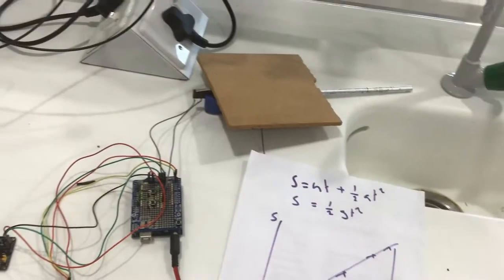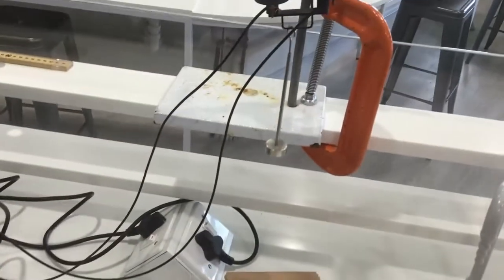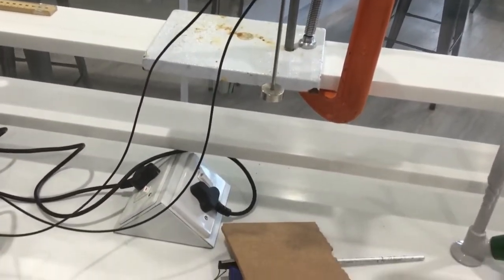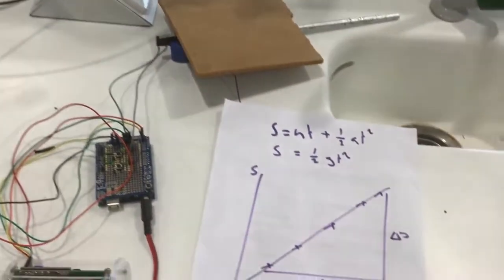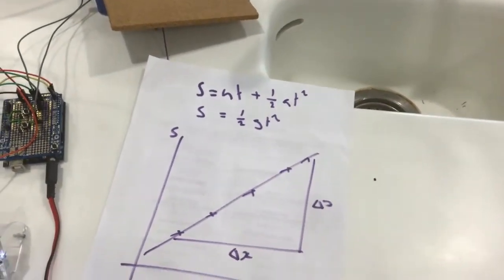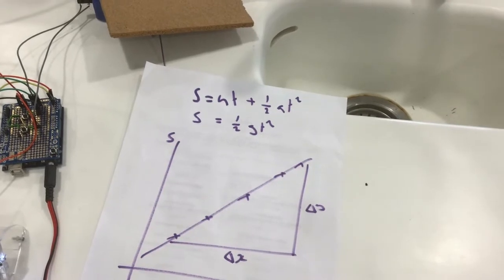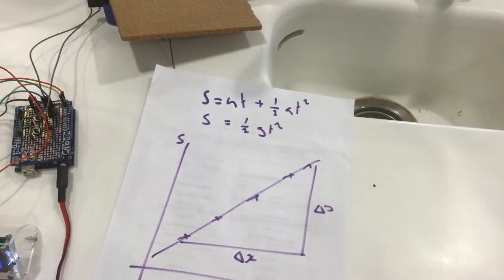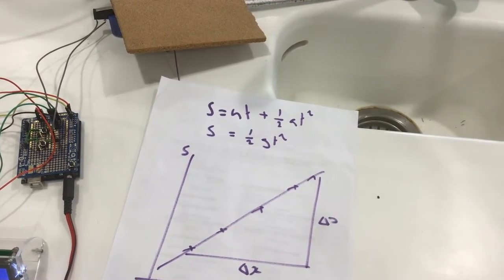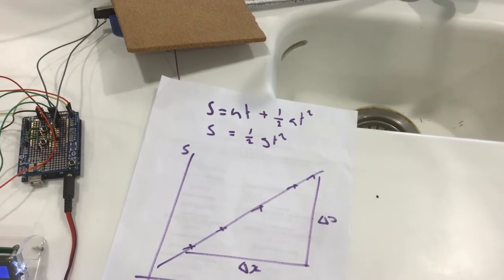So what we're going to do is change the distance that the weight falls and time how long it takes to fall. Now we're going to apply the equation of motion s equals ut plus a half a t squared. There's no initial velocity, so the ut component goes,